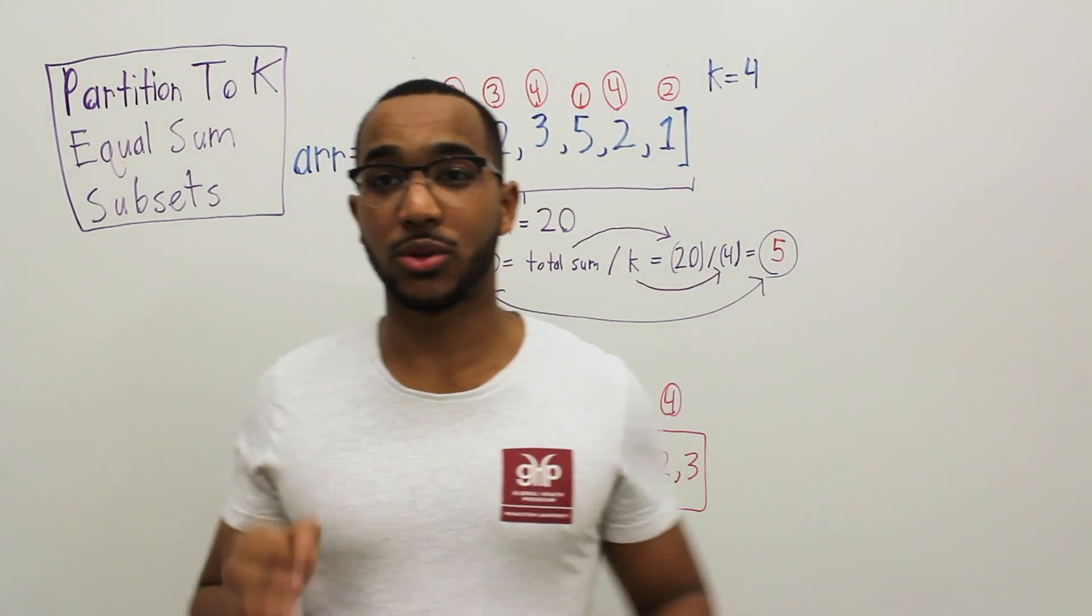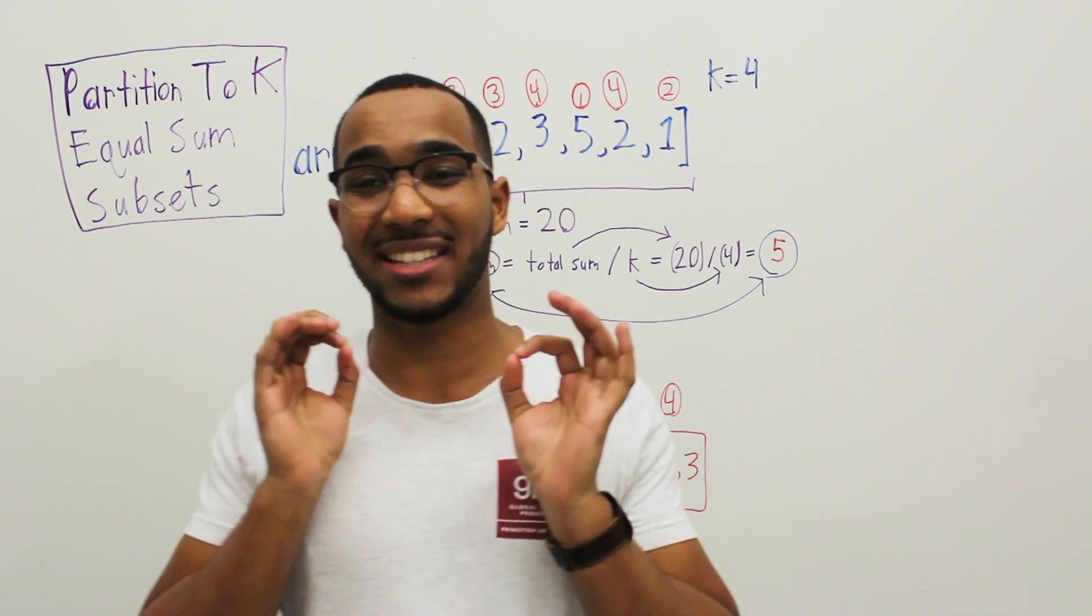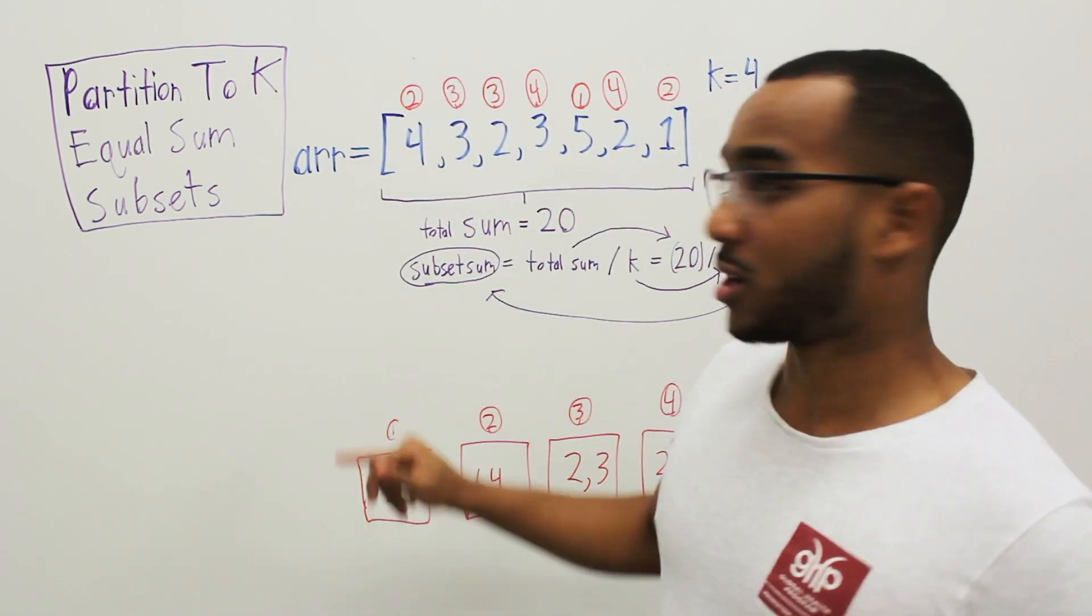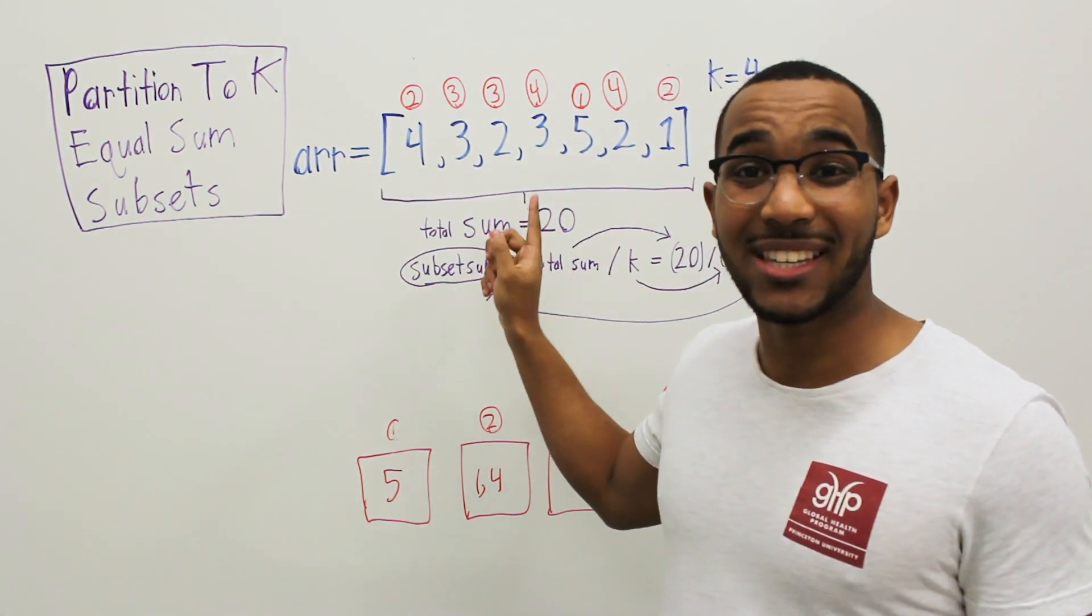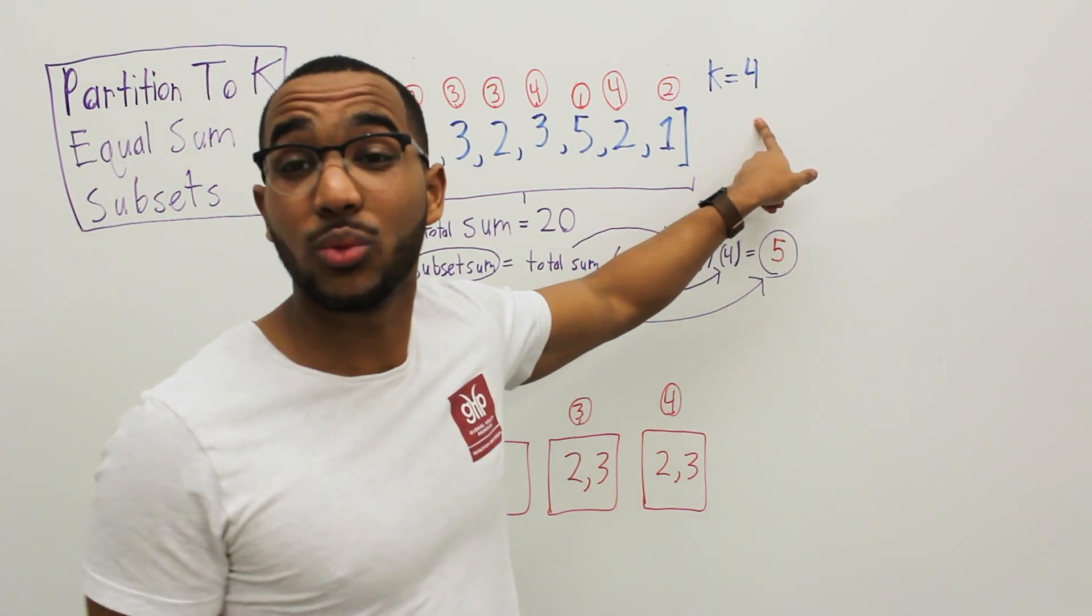Alright, so in today's video we are going to answer the question partition to k equals subset sums. Here is an example. I think the example explains the question for us. We get an array. The sum of all of the array elements is 20. k is 4, meaning we need to form 4 subsets with an equal sum.